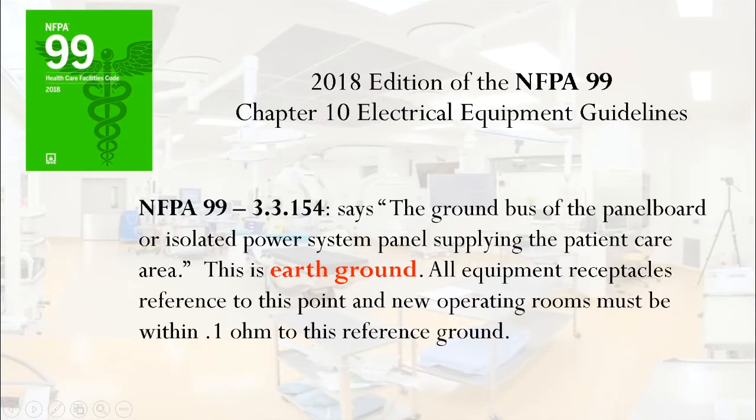NFPA 99 3.3.154 says the ground bus of the panel board or isolated power system panel supplying the patient care area — this is earth ground. All equipment receptacles referenced to this point, and new operating rooms must be within 0.1 ohm to this reference ground. This means the panel board that has the isolation transformer in it is grounded to earth ground.